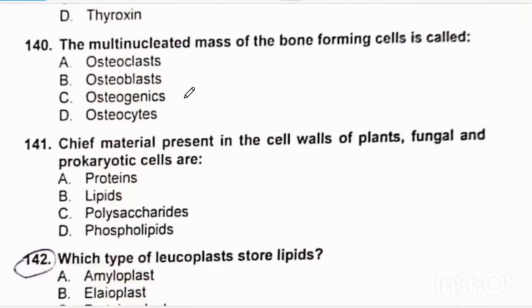Multinucleated mass of bone forming cells. Bone forming cells are osteoblasts. Osteoclasts are bone destroying cells or bone dissolving cells, and osteocytes maintain the bone tissue. Correct option will be beta.